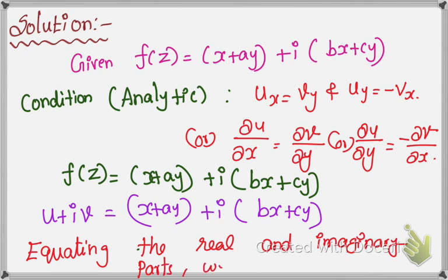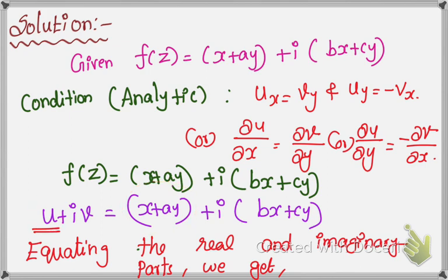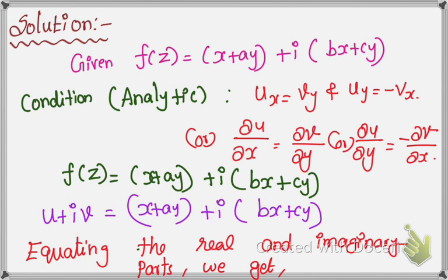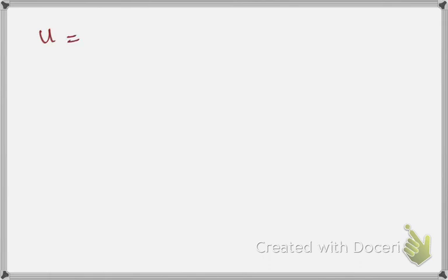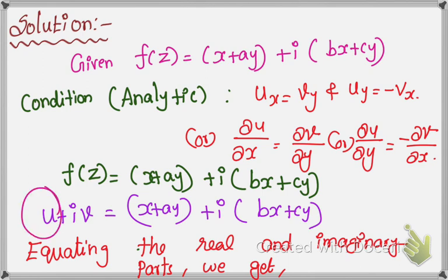Equating the real and imaginary parts: the real part is u — the term that does not have i. The imaginary part is the term that has i. So the real term is u = x + ay, and the imaginary term gives v = bx + cy.